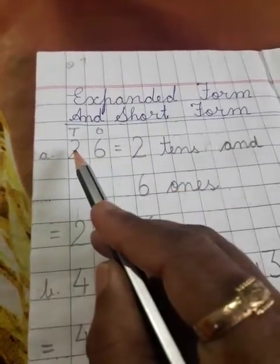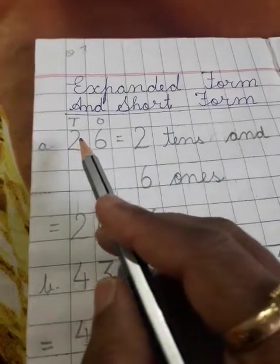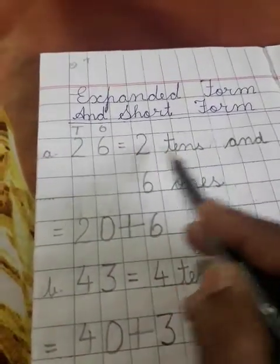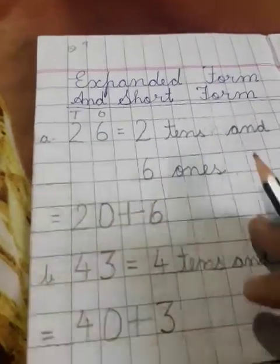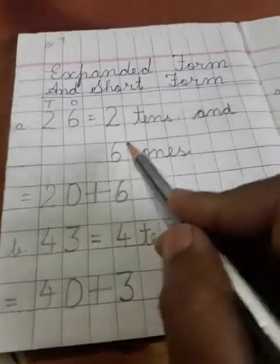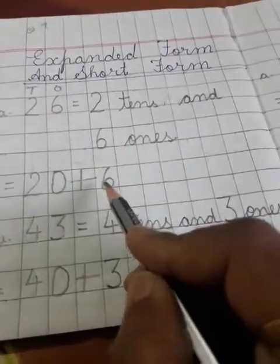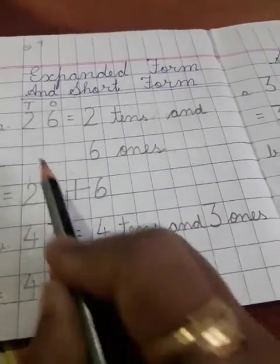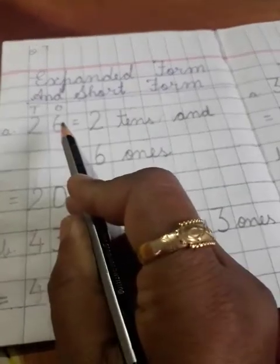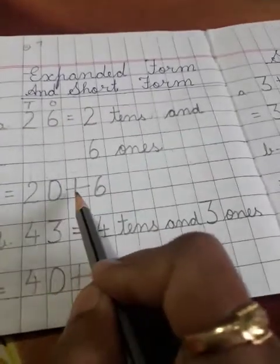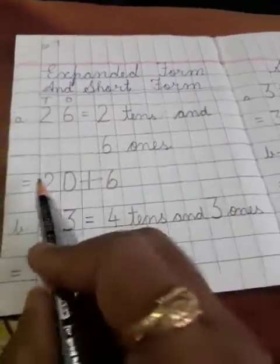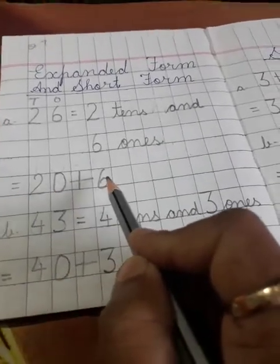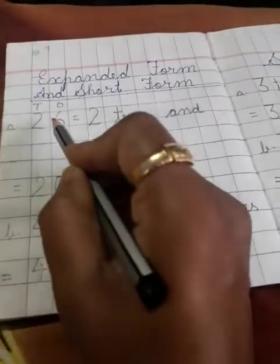That's why 2 here is shown as 20, means 2 tens. 2 tens means 20. And 6 is a single number, so only 6 will be written here. So we can say the expanded form of 26 is 20 plus 6. Here 20 is written and when we add 6 with 20 it will become 26.